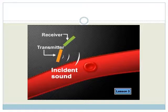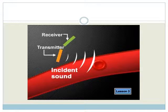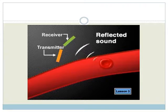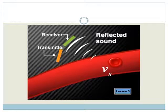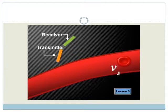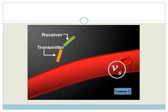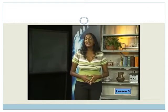The ultrasound waves striking the blood cells have the same frequency as the transmitter. However, the blood cells are moving, so they act as a moving source for the reflected ultrasound waves. The reflected waves are picked up by a receiver, and the difference between the transmitted sound and the reflected sound is analyzed to provide information about the velocity of the blood cells.